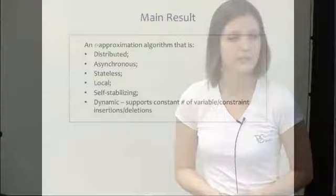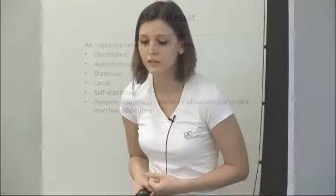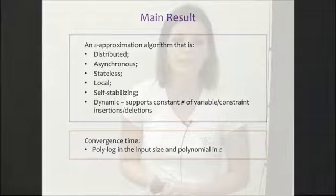The main result is an epsilon-approximation algorithm that is very robust. It can run in a distributed fashion, allows asynchronous updates, only reacts to the current state of the network, makes local updates, can start from any initial state (making it fault tolerant), and allows a constant number of variable and constraint insertions or deletions. The convergence time is polylogarithmic in the input size and polynomial in the accuracy parameter epsilon — probably asymptotically the dependence you should expect, since for linear programming in this setting there are lower bounds.